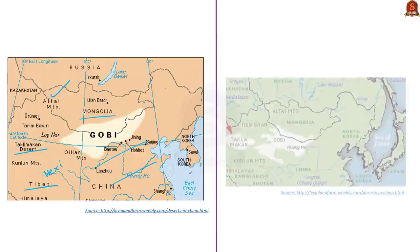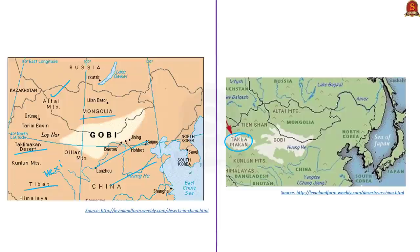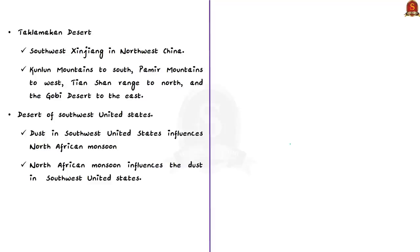The Taklamakan Desert is located in southwest Xinjiang in northwest China. To the south it is bounded by the Kunlun Mountains, to the west by the Pamir Mountains, to the north by the Tianshan Range, and to the east by the Gobi Desert. Another example of the positive feedback loop is the dust in the deserts of the southwest United States influencing the North African monsoon and vice versa.